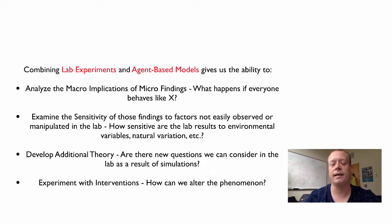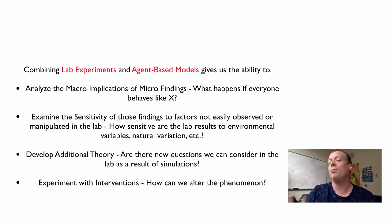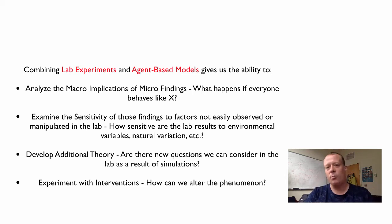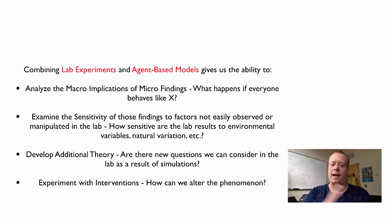Another thing you can do is take a lab finding and examine the sensitivity of that finding to factors not easily observed in the lab. For example, in the Schelling case, you can't easily replicate all the different amenities that particular houses might have in a lab — but you could build a more complex model of residential purchase decision-making in a simulation. You can also develop additional theory: you can see if the lab creates questions you could test in simulation, and based on those simulations, determine if you need new lab results — going back and forth from lab to simulation, generating new theory along the way.